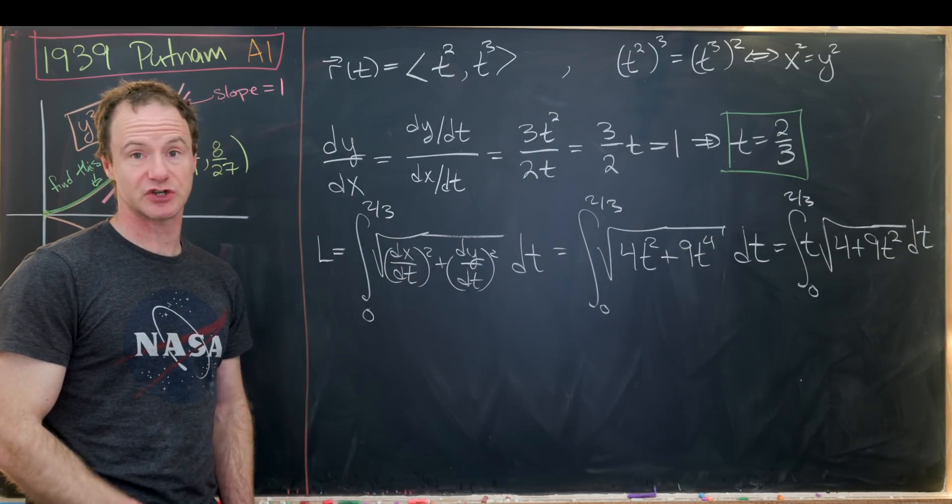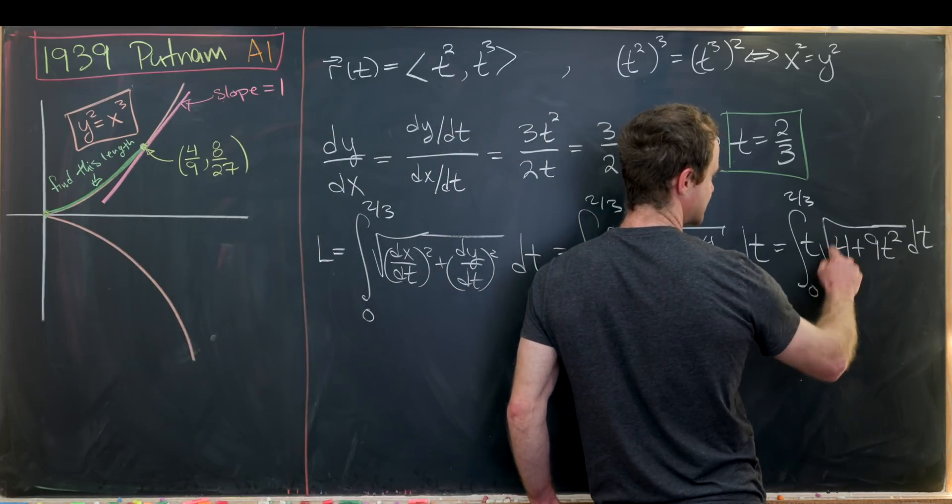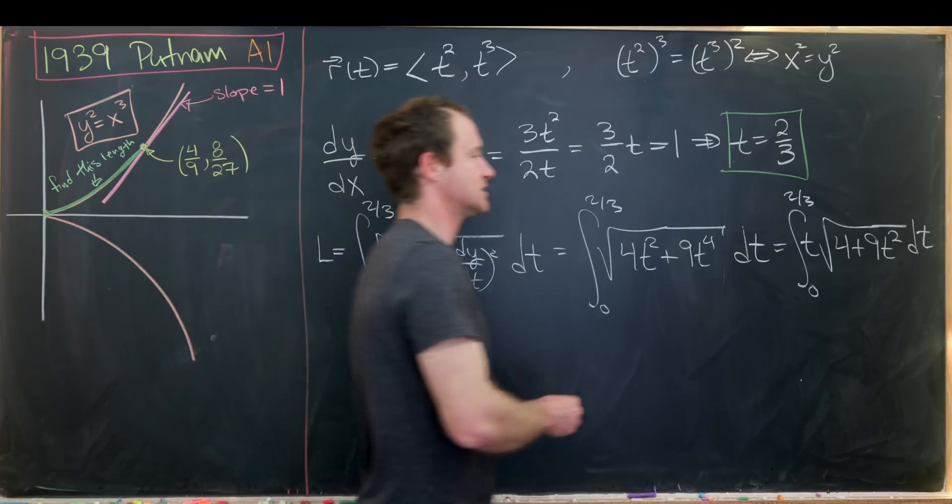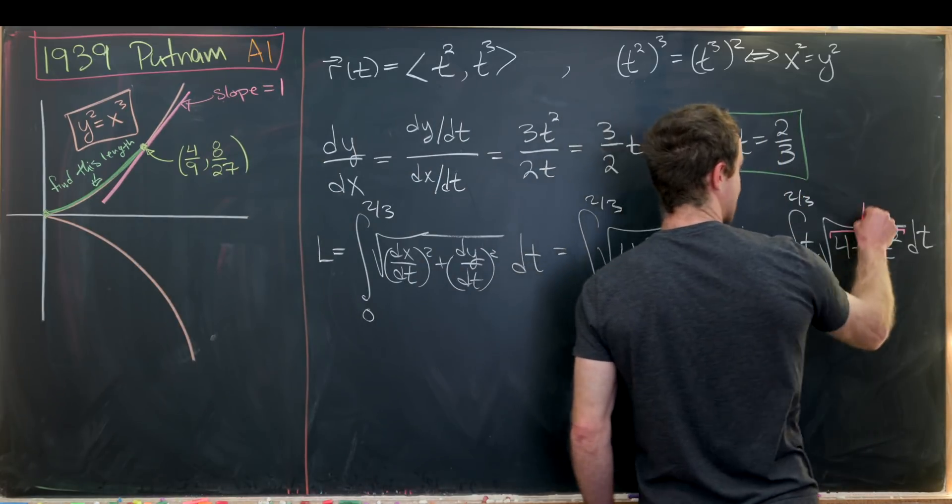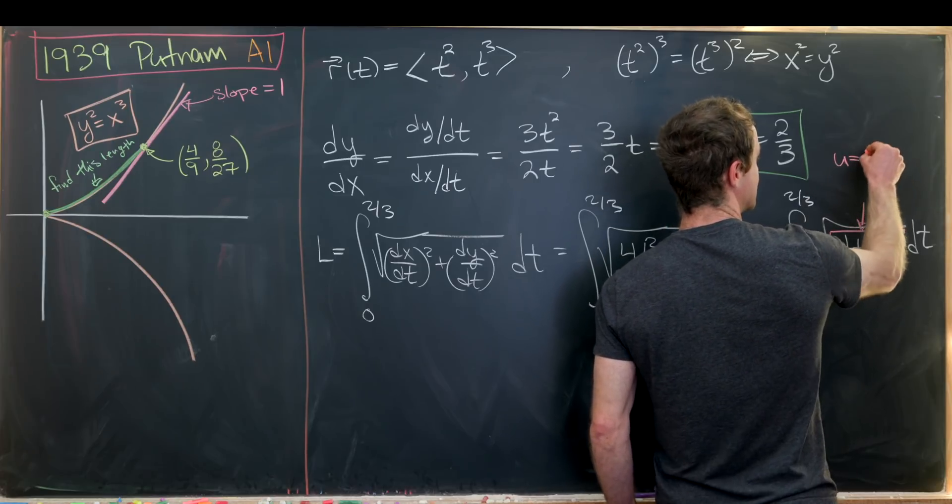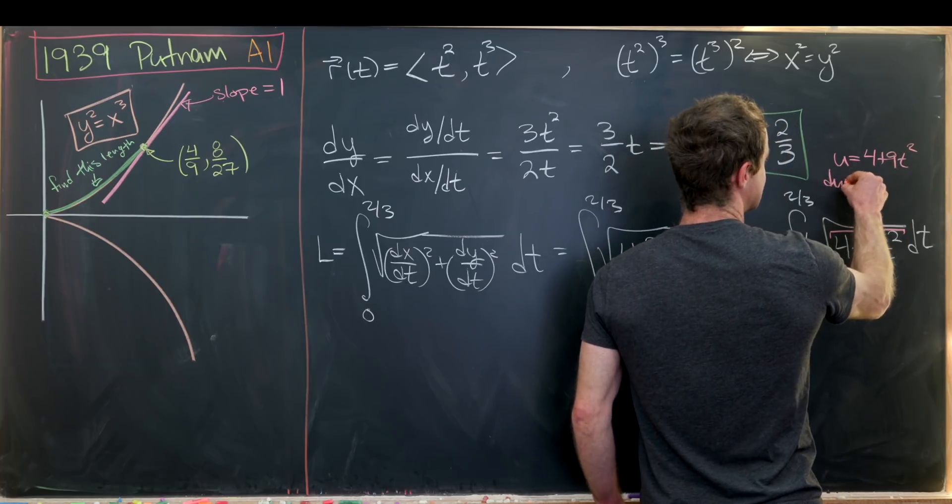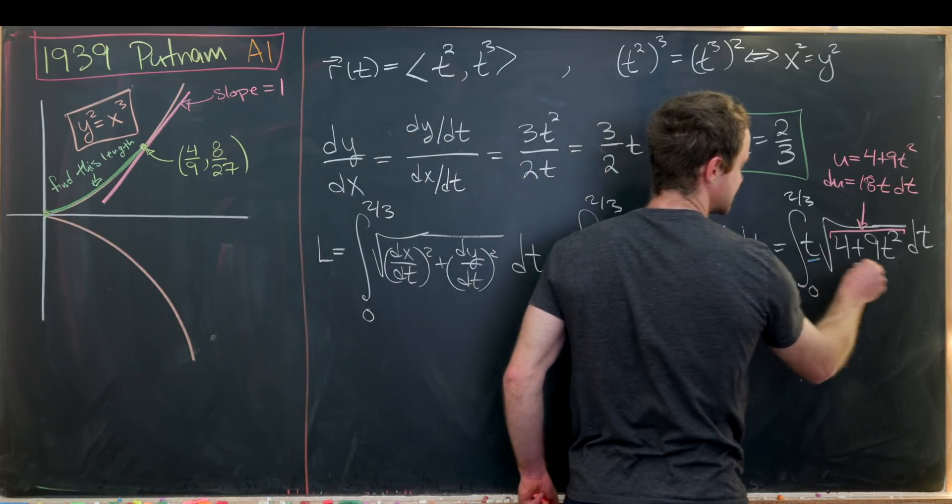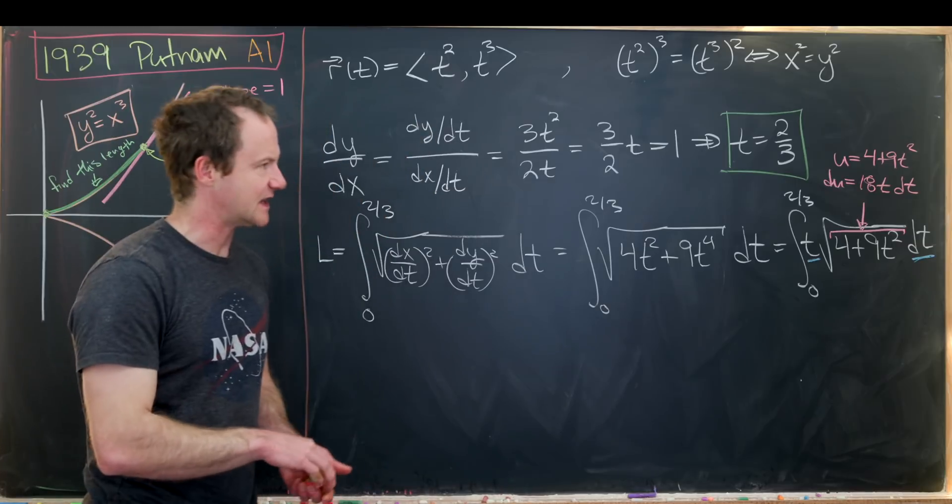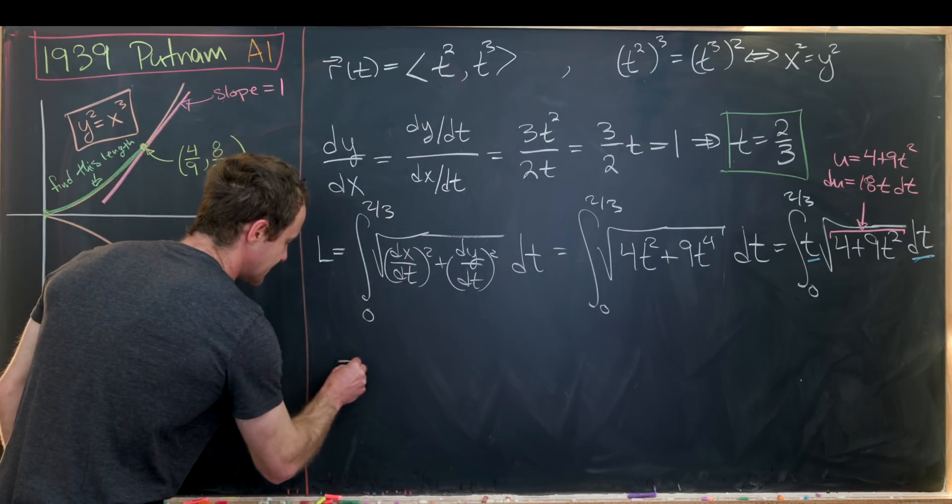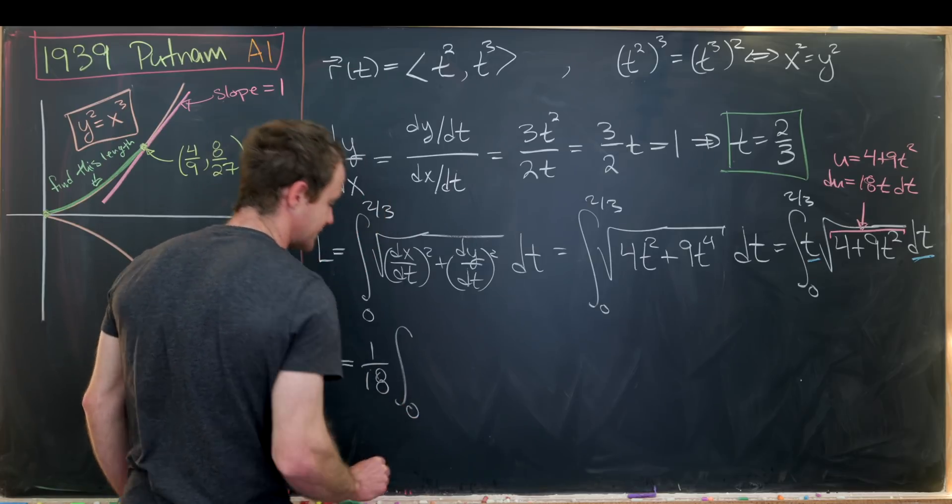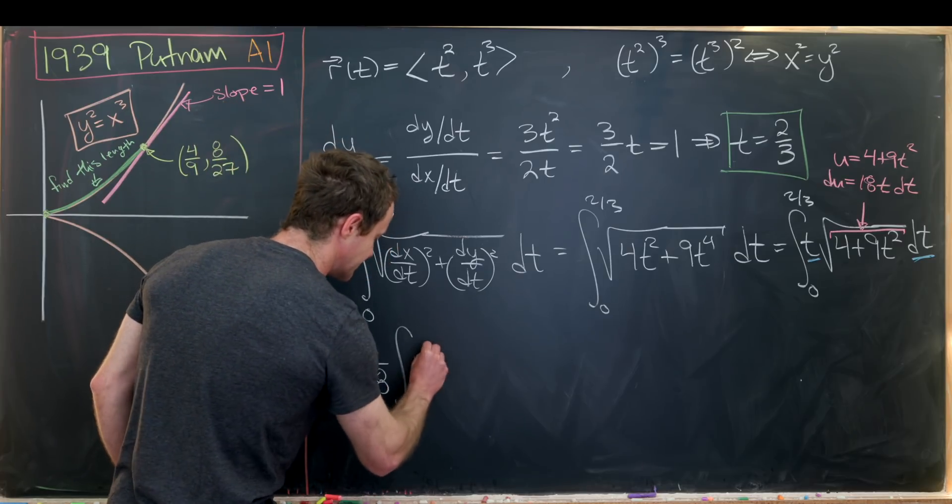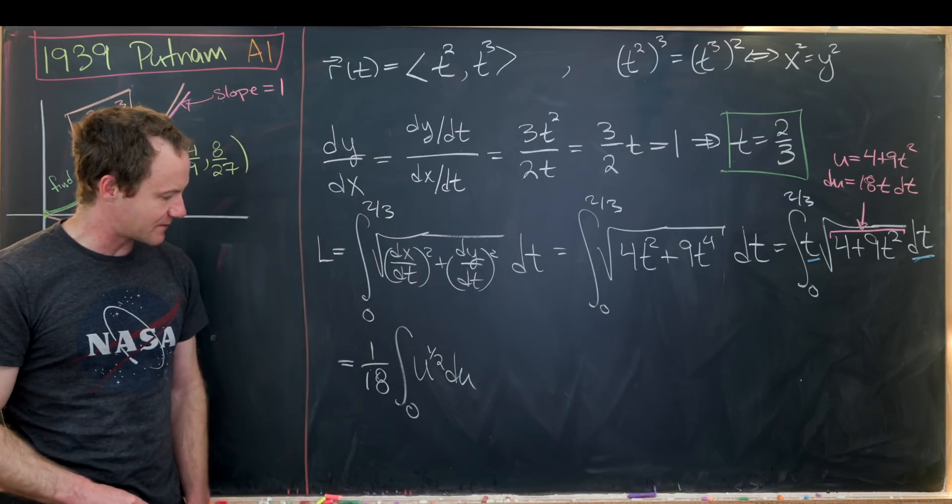Let's notice that we can do a u substitution on this because we have a function composed within another function whose derivative, or close to its derivative, is outside of that composition. If we would take 4 plus 9t squared, and set this equal to u. So u is 4 + 9t². du is equal to 18t dt. If I were to solve for t times dt, then I would get 1/18 du. So that's going to give me 1/18 times the integral, and now we have the square root of u, which is u to the 1/2 du.